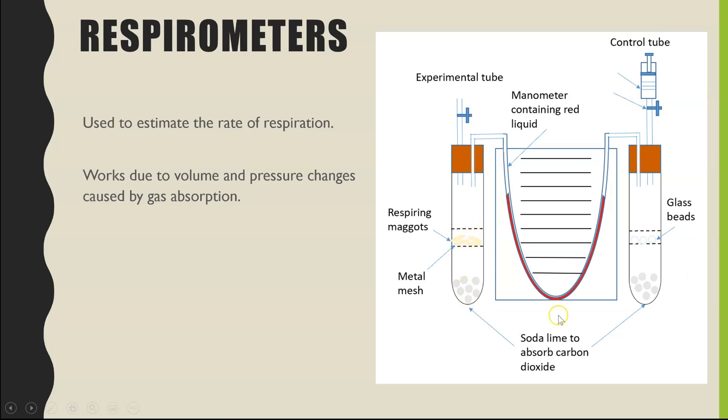In both test tubes we have soda lime. The purpose of this powder or the granules of soda lime is to absorb any carbon dioxide, so then we'll know any changes in volume are just to do with oxygen being absorbed. For this bit here as well you'll have a piece of gauze or a metal mesh just to make sure those maggots can't touch the soda lime because it would be harmful to their skin. It could be an irritant, so we need to make sure they don't touch that soda lime.